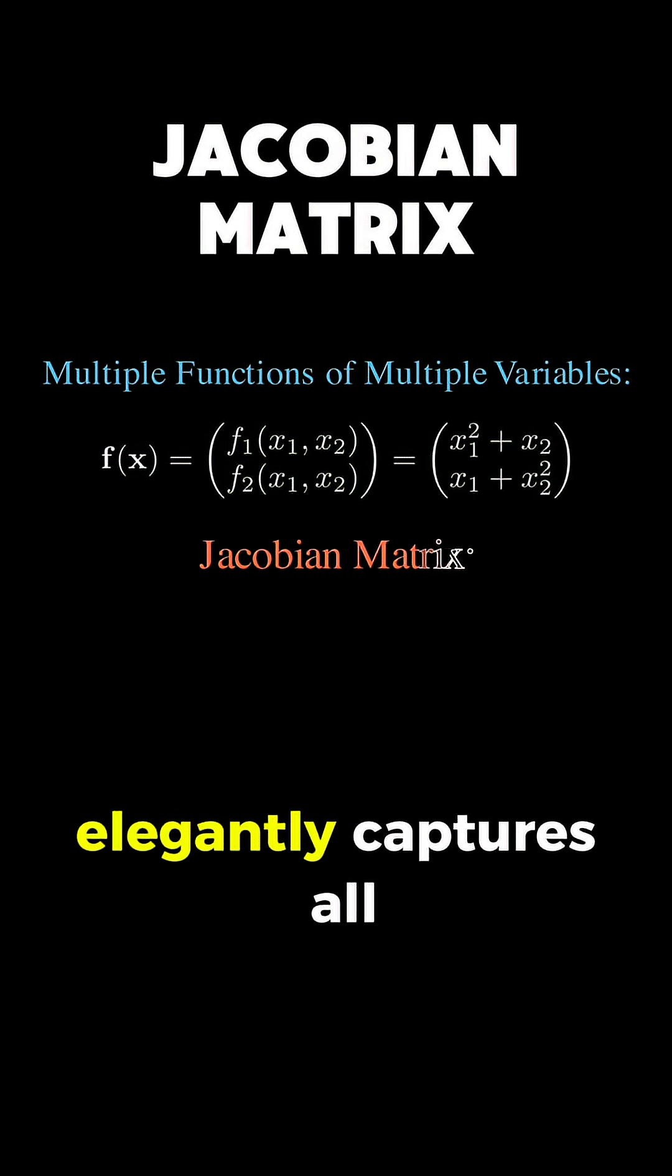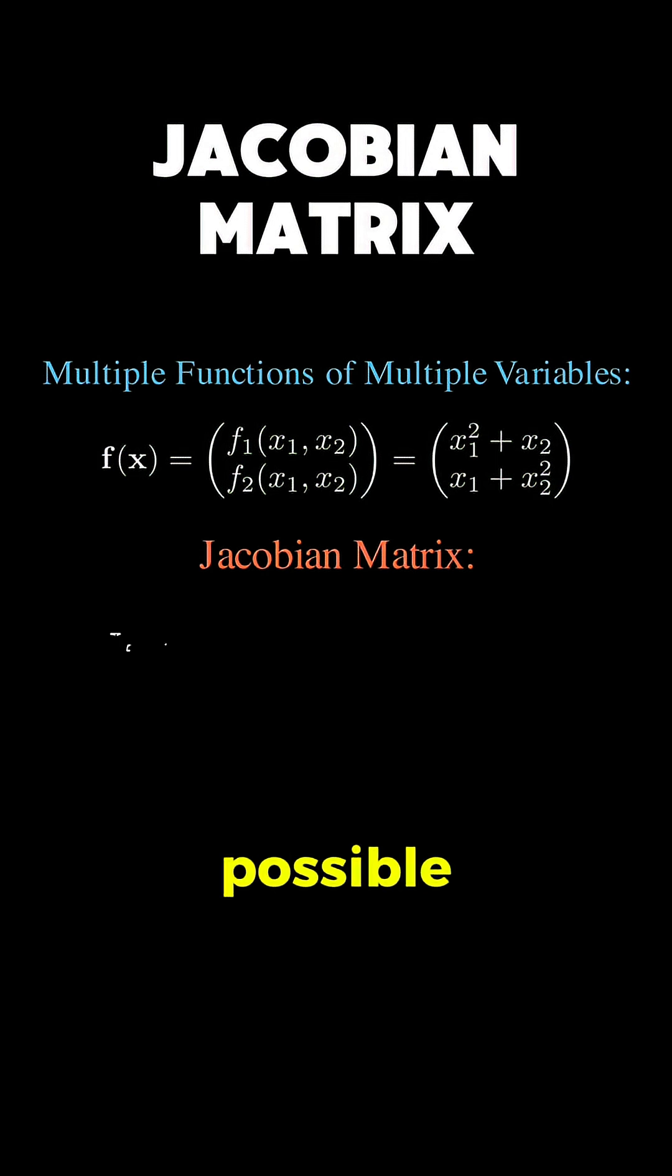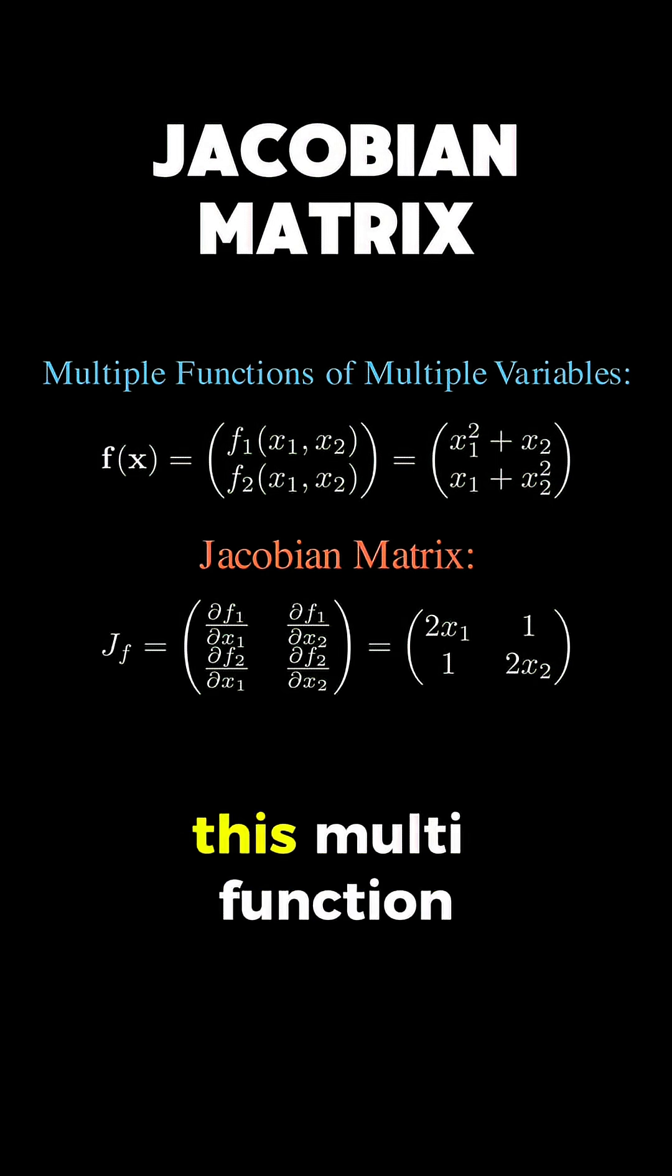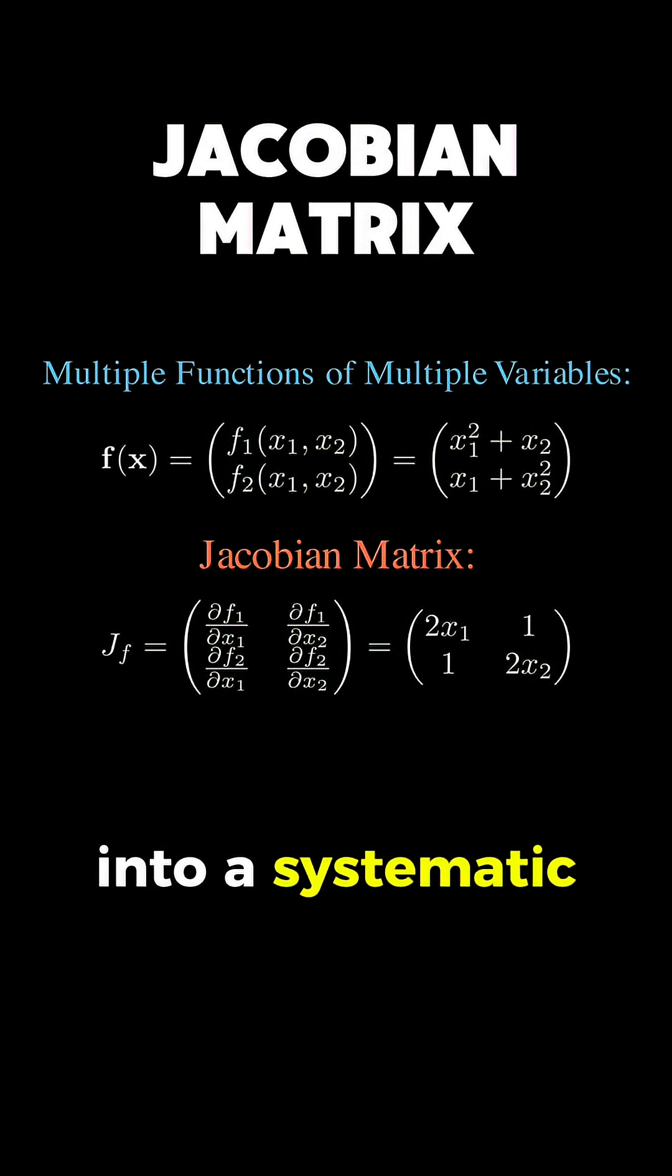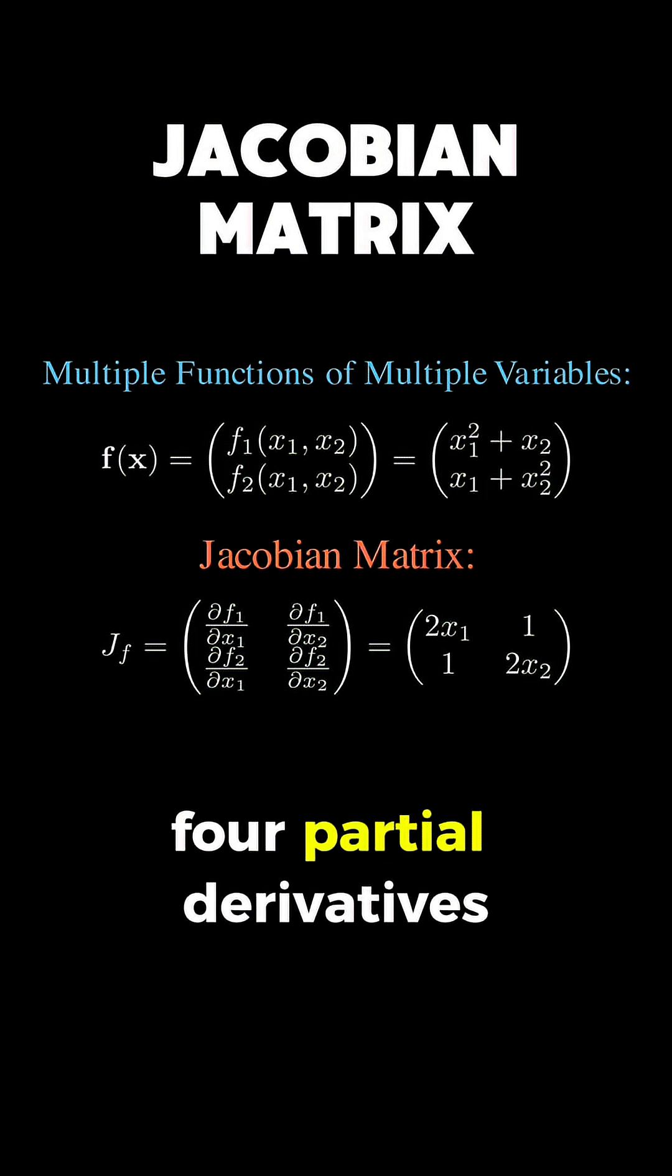The Jacobian matrix elegantly captures all possible derivative relationships in this multifunction, multivariable system by organizing them into a systematic grid. Since we have two functions and two variables, we get exactly four partial derivatives.